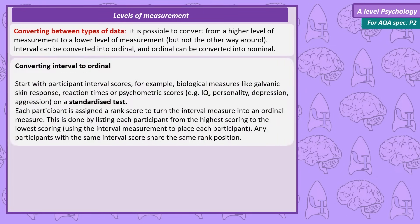First let's talk about how we convert from interval data to ordinal data. We'll start with our interval scores. We've gathered these from our participants so some examples would be galvanic skin response, reaction times or even psychometric scores if we've taken them from a standardized test. Now to turn this interval measure into an ordinal measure what we're going to need to do is give each of our participants a rank score. To do this we'll list each participant from the highest score to the lowest score using that interval measurement. Any participants with the same interval score will just share the same rank position.